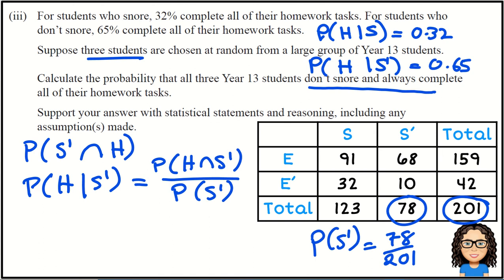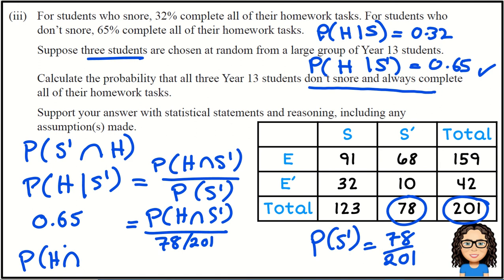So in this case I've already got some of this information. I've got this bit of info here of 0.65, so that is this value there. So 0.65 is equal to my intersection, that's the bit I want to find, and that's divided by the chance of not snoring, which in this case is 78 out of 201.